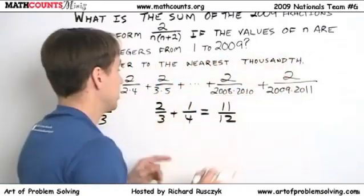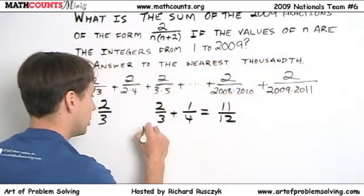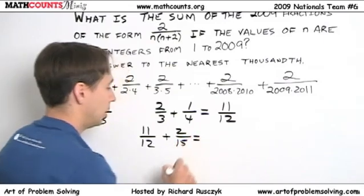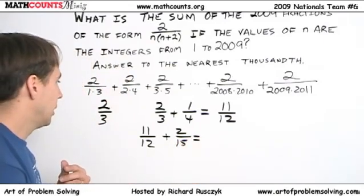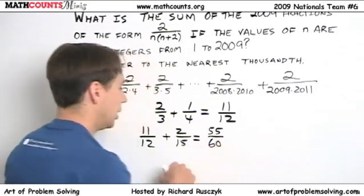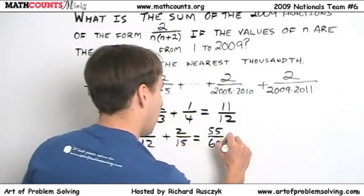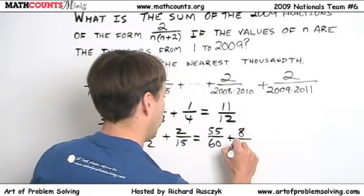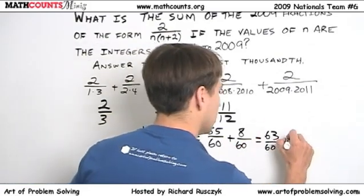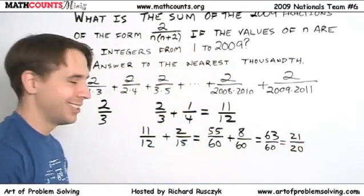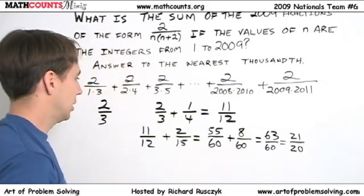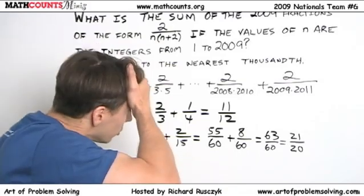Imagine we did the first three terms. We know that the first two terms sum to 11 twelfths. So we start with 11 over 12, and then we add on this one, which is 2 fifteenths. And yikes. What are we going to do with that? Well, let's see. I can multiply this one top and bottom by 5. We have 55 over 60. This one top and bottom, we can multiply that by 4. And that gives us 8 over 60. And we add those two together, we get 63 over 60, which reduces to 21 over 20.